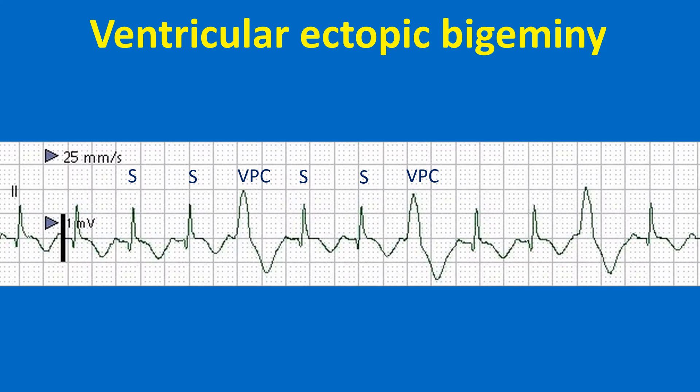This monitor screenshot shows ventricular premature complexes occurring in a trigeminal sequence — two sinus beats followed by a ventricular ectopic beat — ventricular trigeminy. T waves of the sinus beats are widened. VPCs occur after the next sinus P wave and can be called late diastolic VPC. Late diastolic VPCs can occur during reperfusion of an occluded coronary artery in acute myocardial infarction, and they can be followed by accelerated idioventricular rhythm, a classical reperfusion arrhythmia.